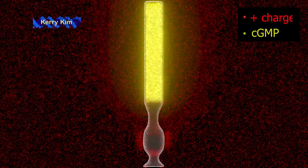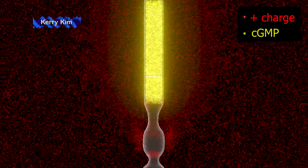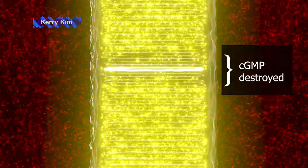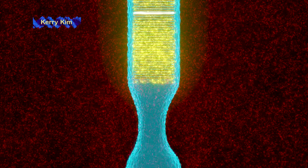After a photon activates rhodopsin, thousands of cyclic GMP molecules are destroyed by phosphodiesterase, depleting the cyclic GMP in that part of the cell. This causes the nearby channels to close, reducing the amount of positive charge entering. The pumps at the other end of the rod keep pushing positive charge out of the cell. As a result, the cell becomes more negatively charged.